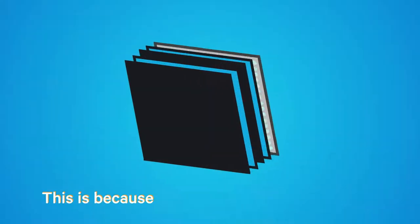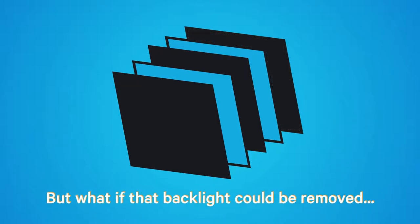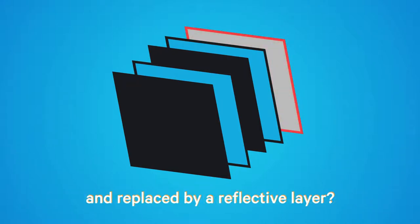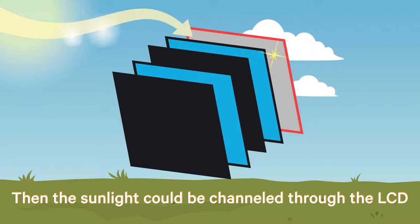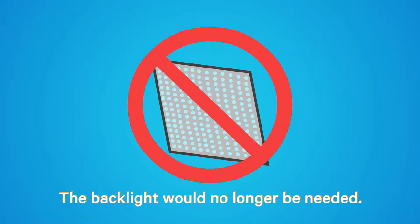This is because most LCDs rely on a backlight. But what if that backlight could be removed and replaced by a reflective layer? Then the sunlight could be channeled through the LCD to light up the display. The backlight would no longer be needed.